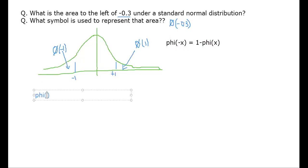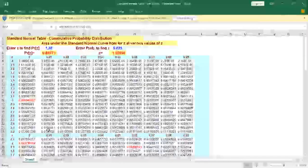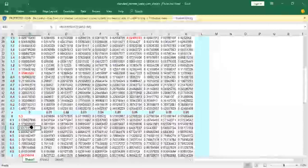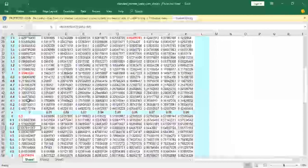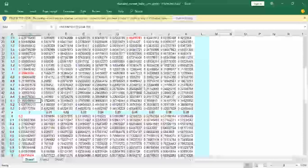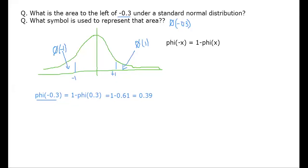To find φ(-0.3), we compute 1 - φ(0.3). From the standard normal table, φ(0.3) = 0.61, so φ(-0.3) = 1 - 0.61 = 0.39. Verifying directly in Excel, φ(-0.3) ≈ 0.382, which is very close to the table-based result.